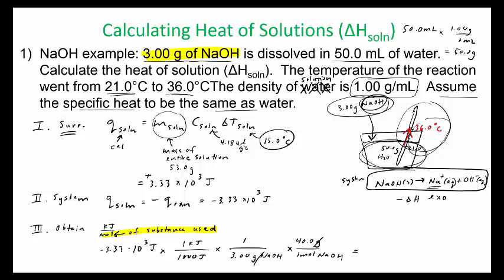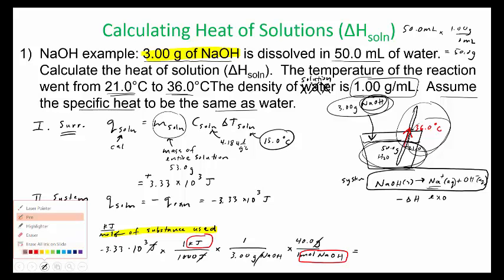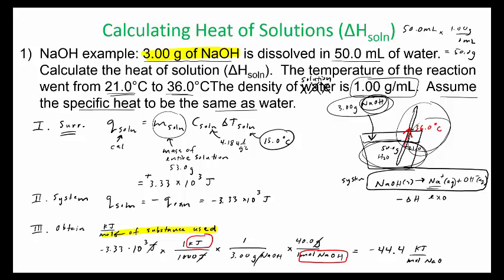All your units should cancel except for the ones you want. So kilojoules per mole of system. Let's see if I have this number. So I got negative 44.4 kilojoules per mole of NaOH.